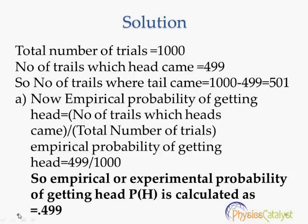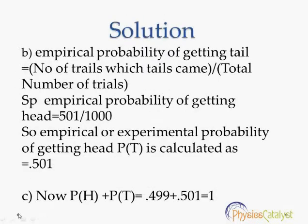So number of trials where tail came would be 1000 minus 499, equal to 501. Now empirical probability of getting head equals number of trials where head came divided by total number of trials. So it is equal to 499 divided by 1000, giving an empirical or experimental probability of getting head as 0.499.